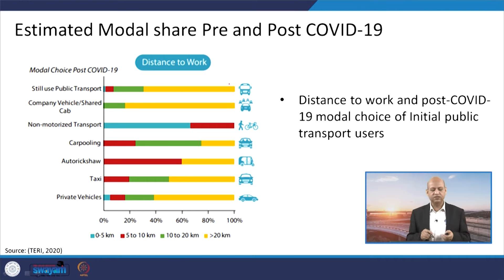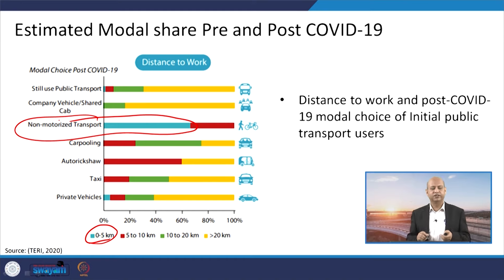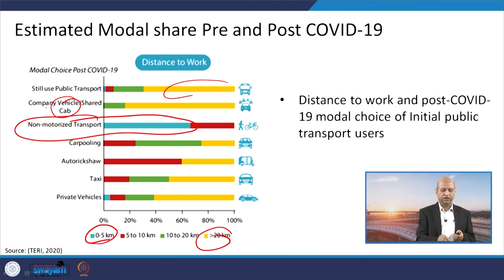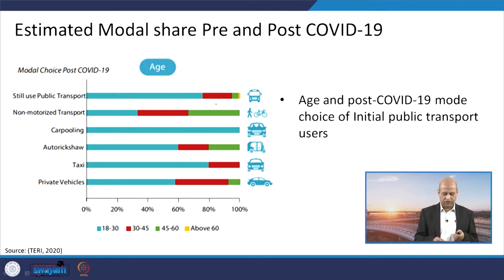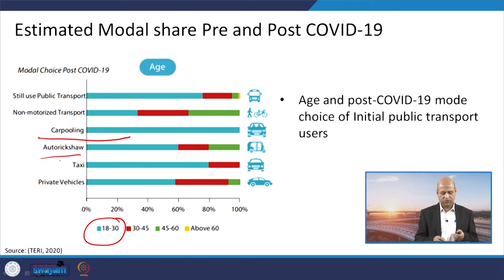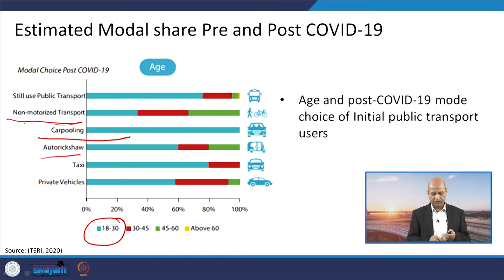Categorizing by distance to work, for short distances of 0 to 5 kilometers, non-motorized transportation has met the need. For larger distances, some public transportation systems or company vehicles are catering to those trips. Looking at age-related behavior post-COVID: the 18 to 30 age group is using carpooling or auto-rickshaws as they are mostly working, using almost all vehicle types but fewer NMTs. The 45 to 60 age group is preferring NMTs more, while those above 60 prefer public transportation because driving is difficult for them.